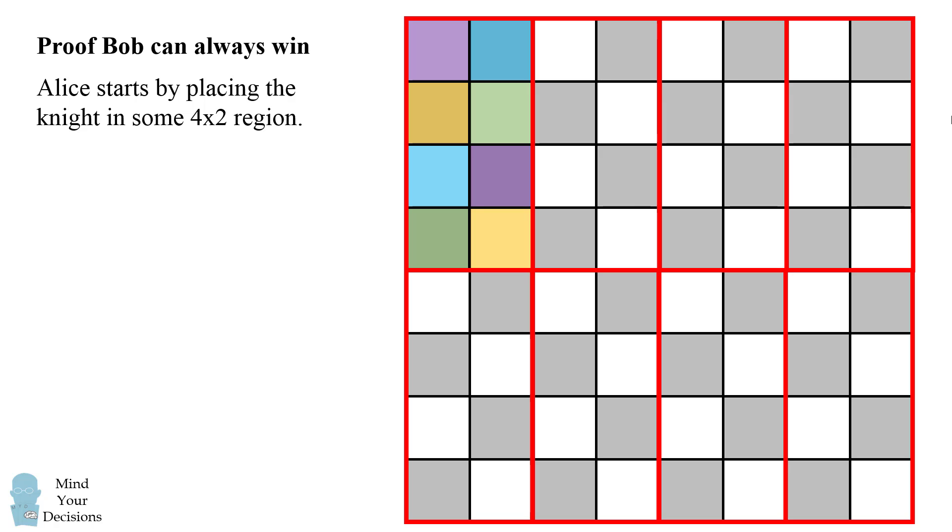Alice starts the game by placing the knight in some 4x2 region. Let's say she places the knight here. What Bob will do is he'll then move the knight to the only other legal square in the same 4x2 region.